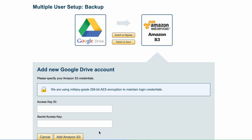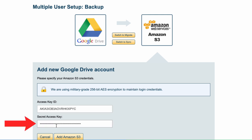Next, you'll be prompted to enter in your access key ID and secret access key, then click Add Amazon S3.